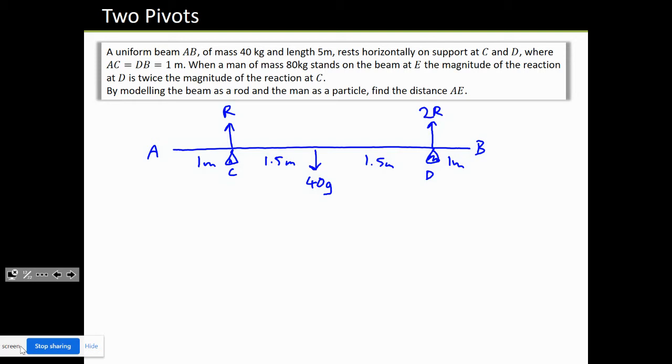We have a man of mass 80 kilograms standing on the beam at E, at point E, which is going to be closer to point D, because it just makes more sense, because the reaction force is bigger to counteract the weight of the man. The weight of the man is 80g. We don't know the distance, so we're going to call that x meters. Because the whole distance between C and D is 3 meters, we're going to call this 3 minus x meters.